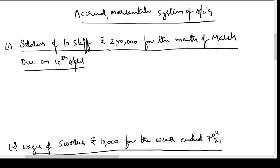Let us say in a business we have a transaction: salaries of 10 staff — that means we have 10 staff working for us — Rs. 2,40,000. The total salary for these 10 staff is 2,40,000 for the month of March, due on 10th April. That means for the work done by them in the month of March, the salary to be paid is 2,40,000, but the due date is 10th April. Based on the terms of the employment contract, the employee can demand his salary for March only on 10th April.